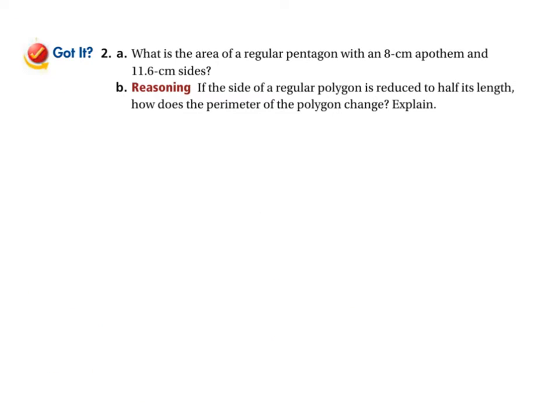Here's a practice problem. What's the area of a regular pentagon with an 8 centimeter apothem and 11.6 centimeter sides? That's the first thing to calculate. Then there's a reasoning question: if the side of a regular polygon is reduced to half its length, how does the perimeter of the polygon change? Explain. Pause the video now, answer both questions, and unpause when you have your answers. If you're not doing this, you're not doing the work you need to really master this.